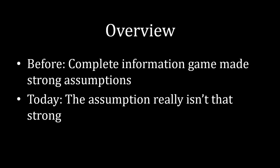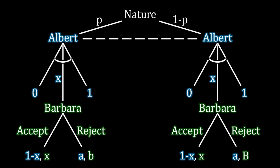And to see this, we're going to generalize our game of uncertainty that we've been playing around with before. So this is that game, the structure is exactly alike, where Albert doesn't know whether Barbara is one type or the other, he makes an offer to Barbara, and then Barbara accepts it or rejects it.